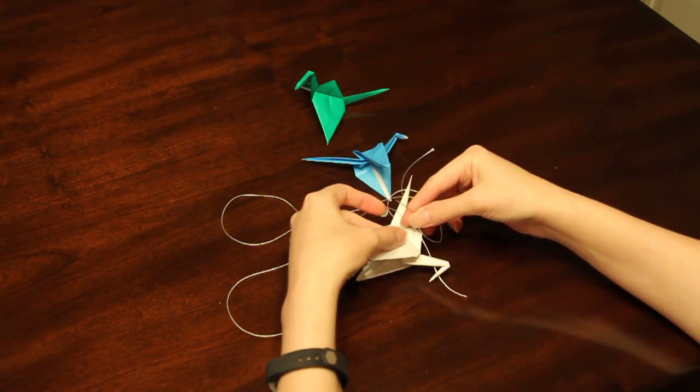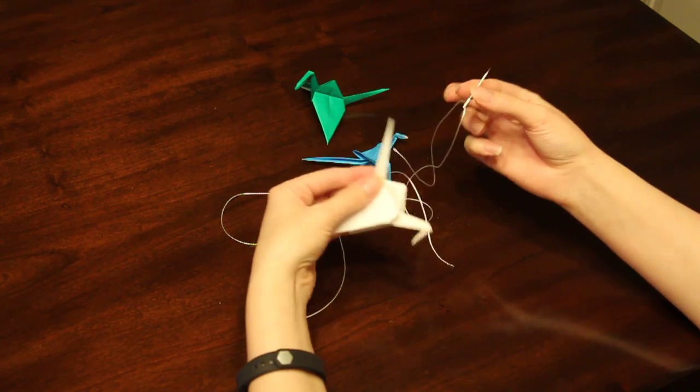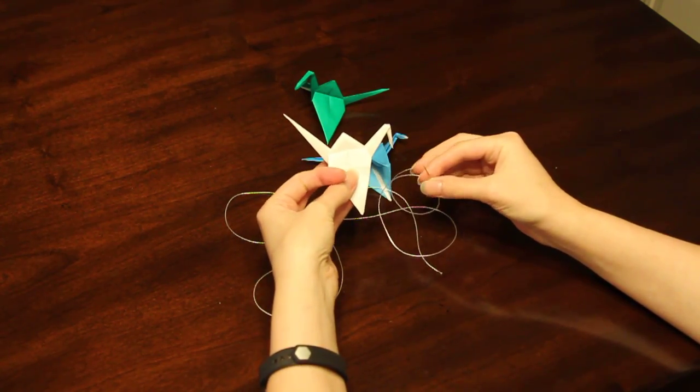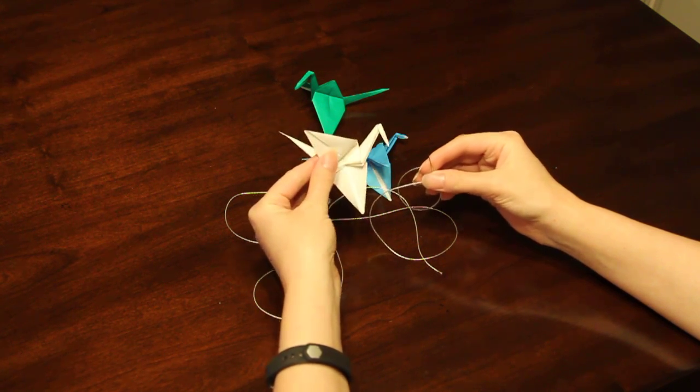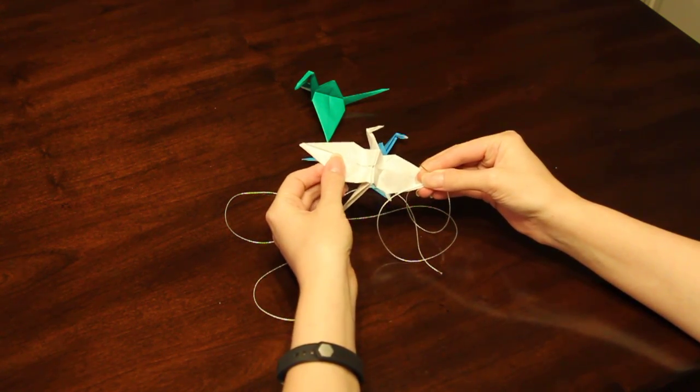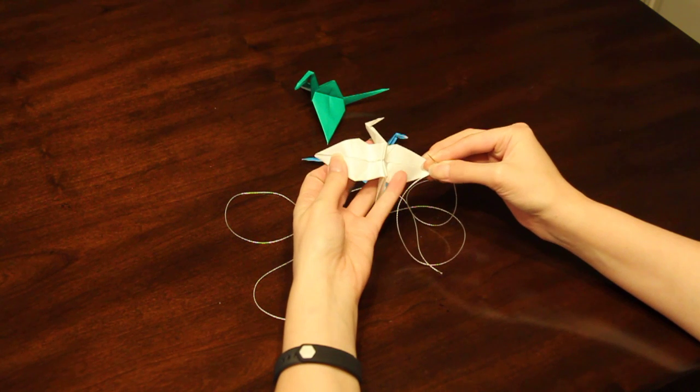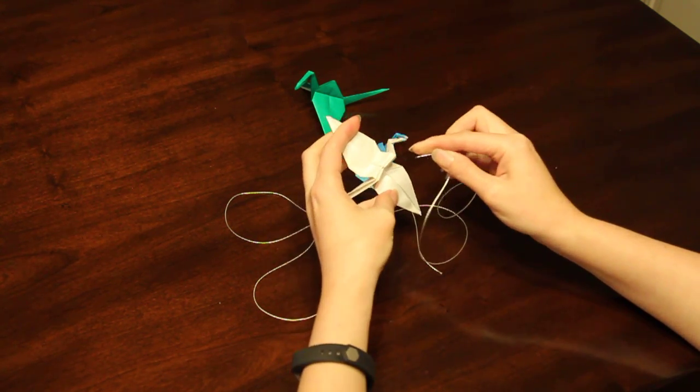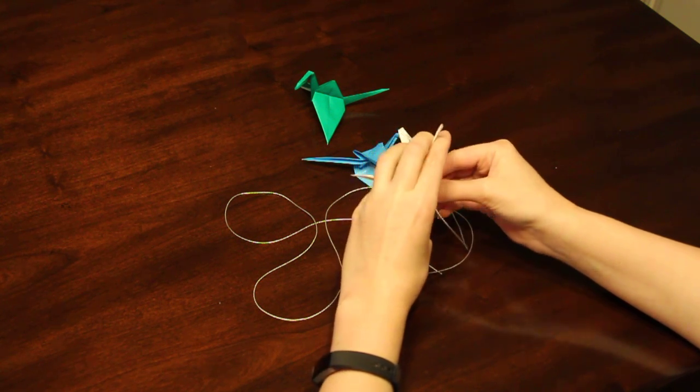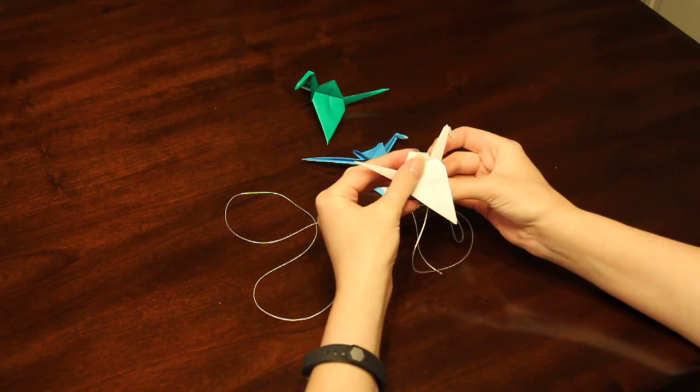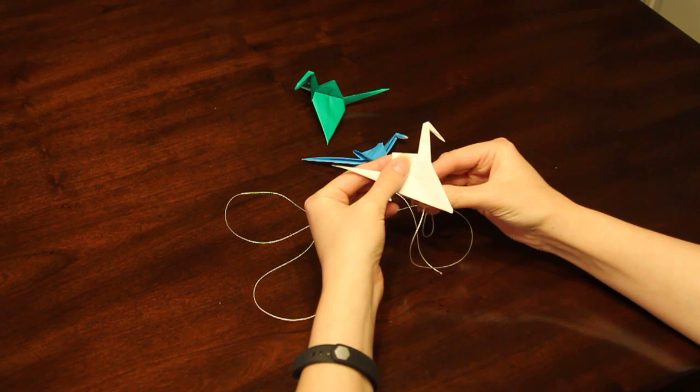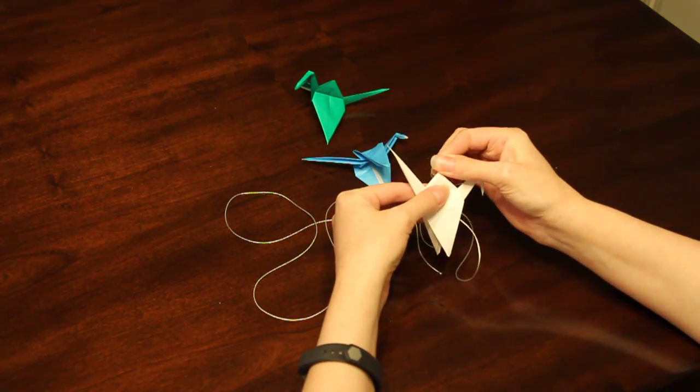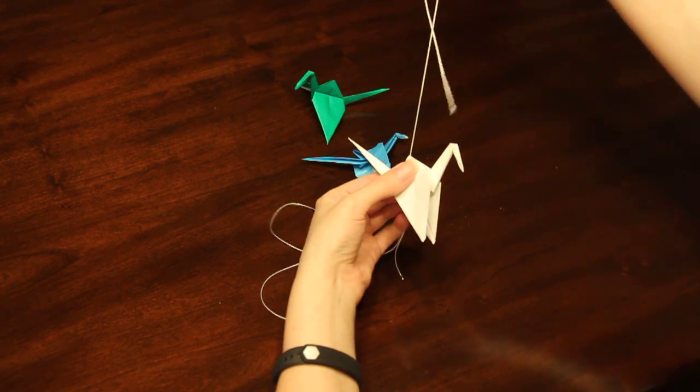After you're done folding your cranes, you'll take your needle, thread it, and then take your first crane. Look at the bottom - when you look at the bottom there's a hole down there. Stick the needle through that hole, and it should come up through the point of the crane. Push the needle through just like that and pull it through.